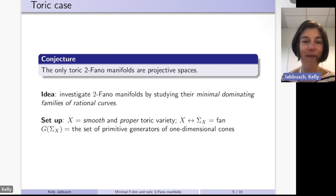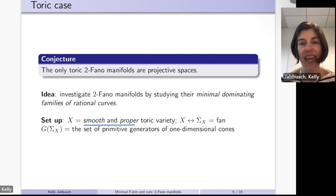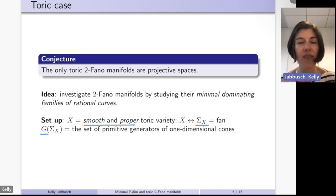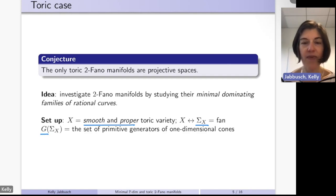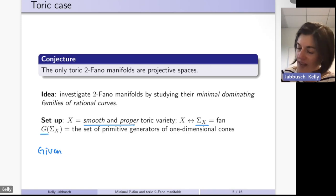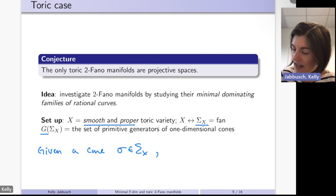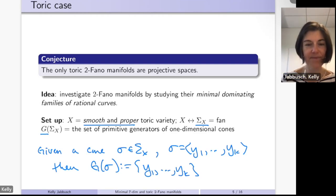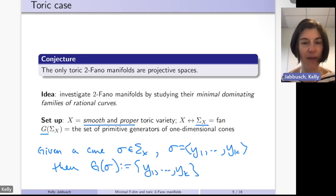In the toric case, we start with a smooth proper toric variety and its corresponding fan Σ_X. We denote by G the set of primitive generators of one-dimensional cones in the fan. Given a cone σ generated by y₁ through y_k, we denote by G(σ) the generators of its one-dimensional cones.